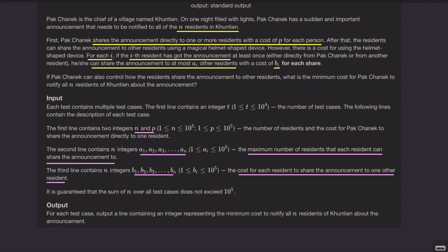After that, the residents can share the announcement to other residents. The chief will share to some residents, either one or more. Then each resident can share this announcement. If a resident has been shared an announcement, each resident has a capacity - he can share to at most A_i number of other residents with a cost of B_i for each share.